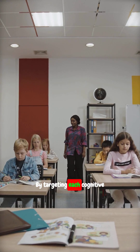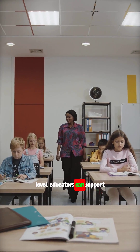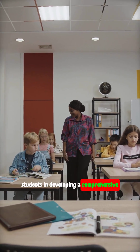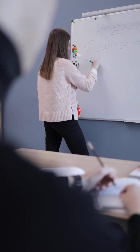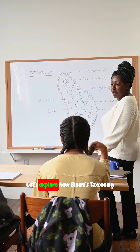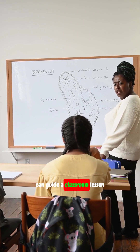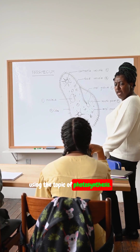By targeting each cognitive level, educators can support students in developing a comprehensive set of thinking skills. Let's explore how Bloom's Taxonomy can guide a classroom lesson using the topic of photosynthesis.